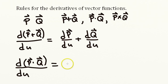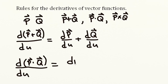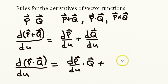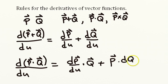Next, let's look at the derivative of the dot product of two vectors. This is similar to the multiplication of two scalars and the way you handle the derivative there. We take the derivative of the first and dot that into the second vector, then add the first dotted into the derivative of the second vector — just like the product rule.